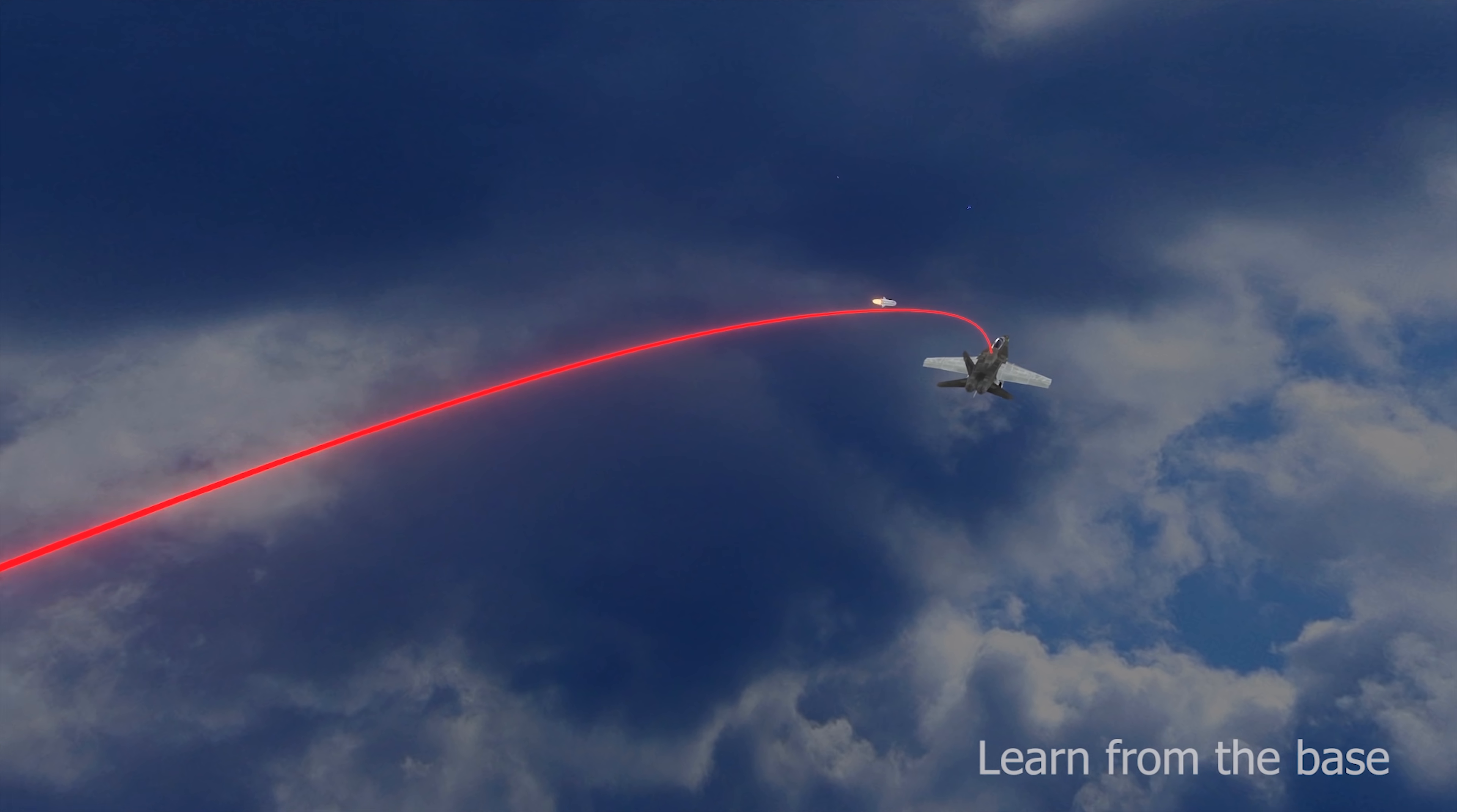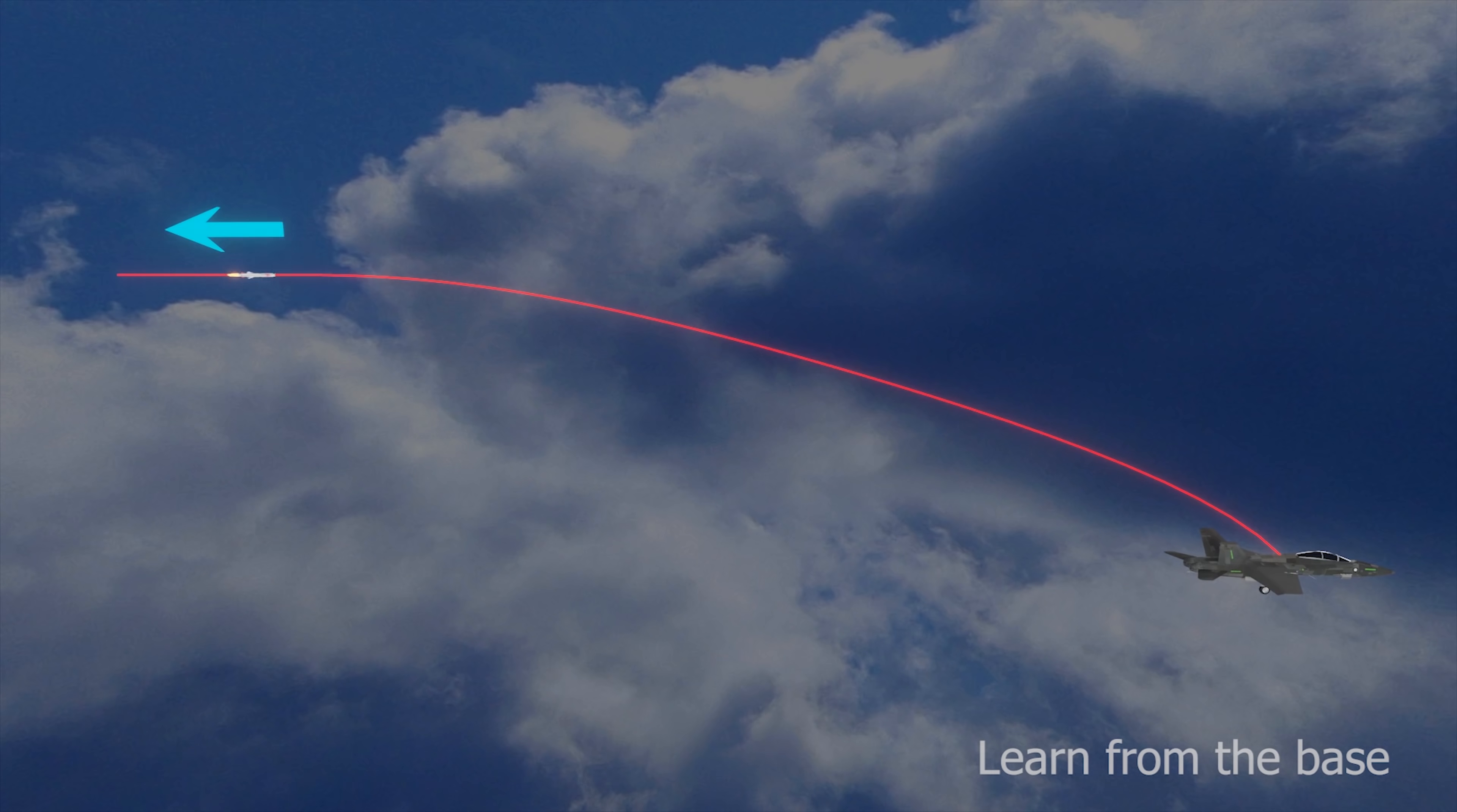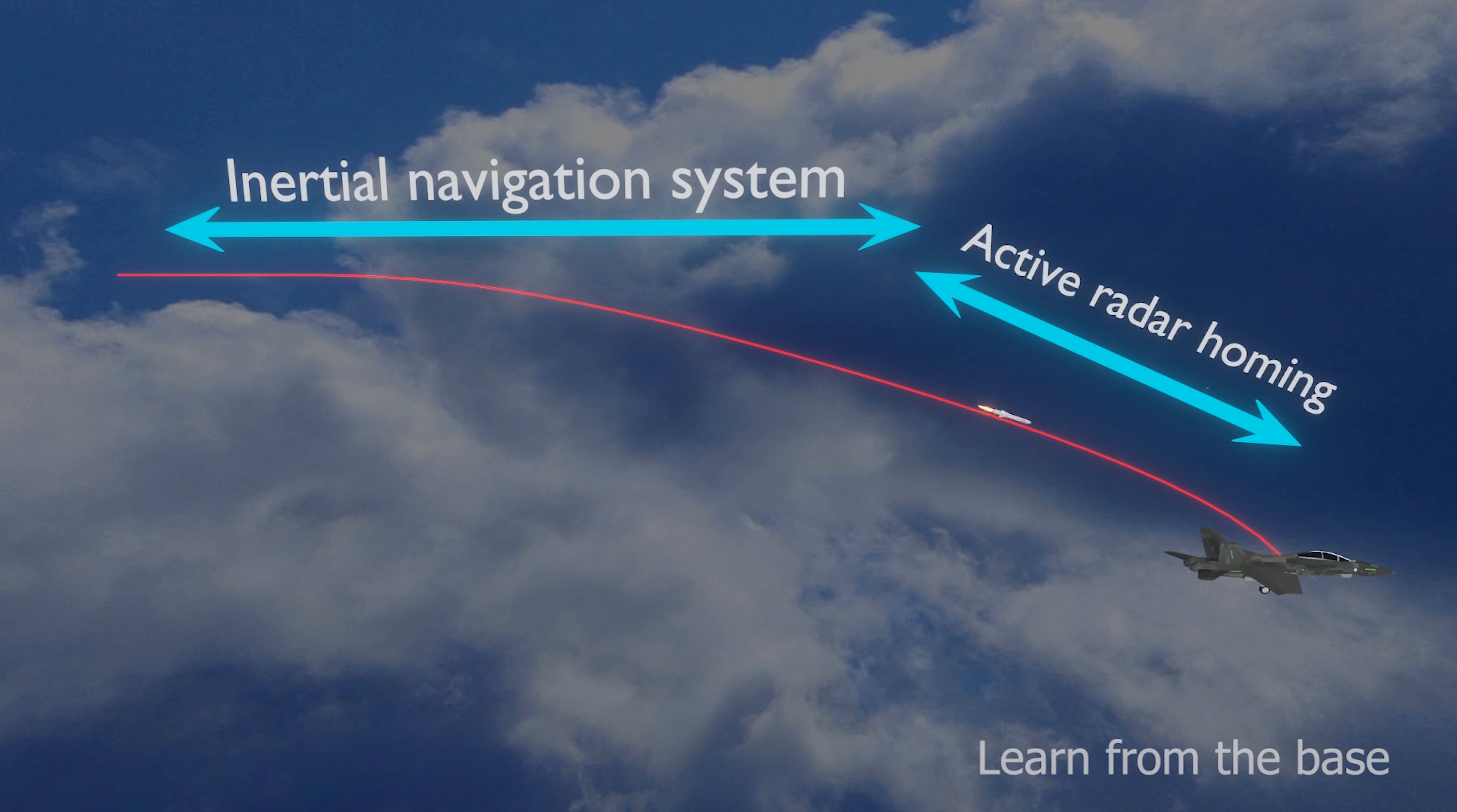On the basis of the guidance system, the missile traveling path is divided into two: the mid-course and the terminal phase. During the mid-course, the missile uses inertial navigation system. During the terminal phase, the missile is near the target, so it needs more accuracy to hit the target. So the missile shifts the guidance system to active radar homing.